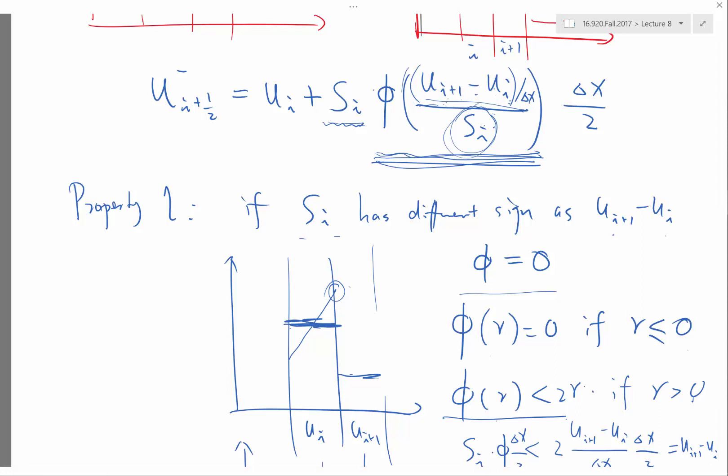And the perfectly linear function is important because as you refine the grid, you would be getting locally, if you just look at the surrounding three cells,